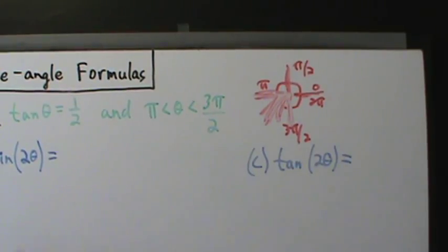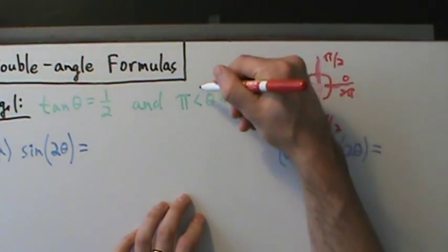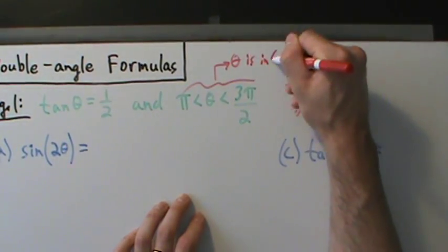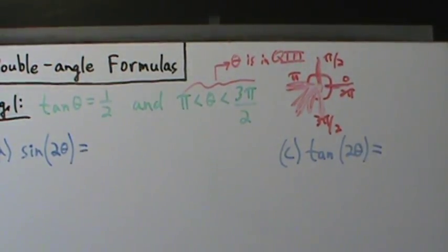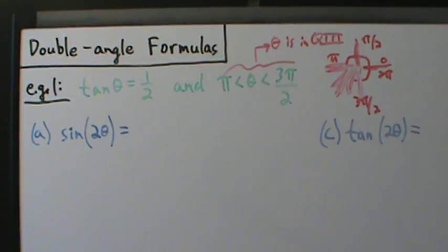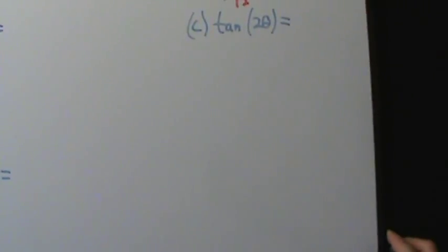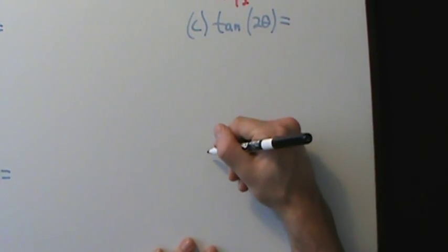So that means somewhere in the third quadrant, and that's all we have to know. Theta is in quadrant 3. So we're going to have to set up a little reference triangle type picture here. Let's draw our reference triangle in quadrant 3.